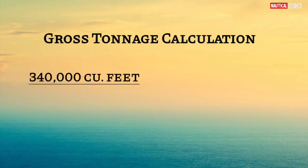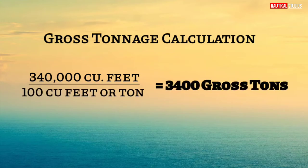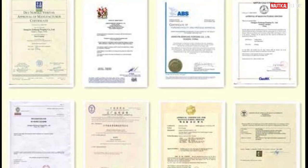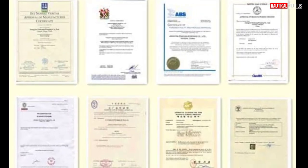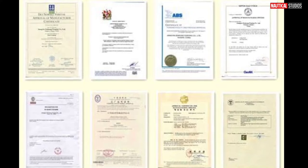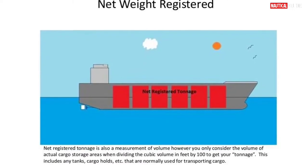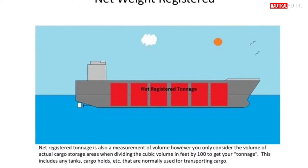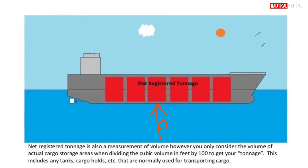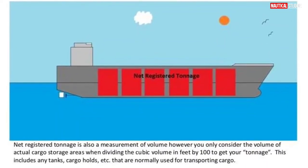340,000 cubic feet divided by 100 cubic feet per ton equals 3,400 gross tons. Gross tonnage is what you'll see most often on official ship documents and certificates, but you'll also see net tons and deadweight tons expressed as DWT from time to time. Net registered tonnage is also a measurement of volume; however, you only consider the volume of actual cargo storage areas when dividing the cubic volume in feet by 100 to get your tonnage. This includes any tanks, cargo holds, etc. that are normally used for transporting cargo.